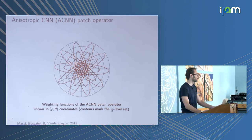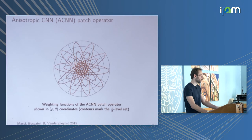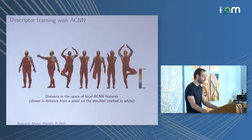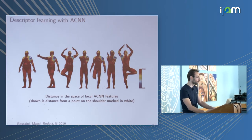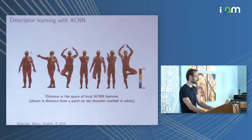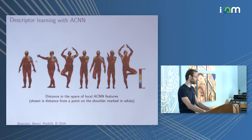We call these anisotropic convolutional neural networks — a NIPS 2016 paper. They work better than geodesic CNNs: more stable and easier to compute.